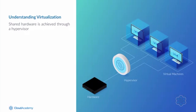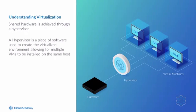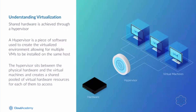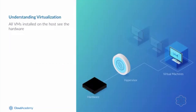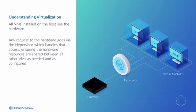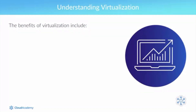This sharing of hardware resources is a key element of understanding virtualization, and is achieved through a hypervisor. A hypervisor is a piece of software used to create the virtualized environment, allowing multiple VMs to be installed on the same host. When installed, the hypervisor sits logically between the physical server hardware and the virtual machines, creating a shared pool of virtual hardware resources for each of them to access. All VMs installed on the host see the hardware as they normally would; however, any request to the hardware goes via the hypervisor, which handles access and ensures resources are shared between all VMs as needed.